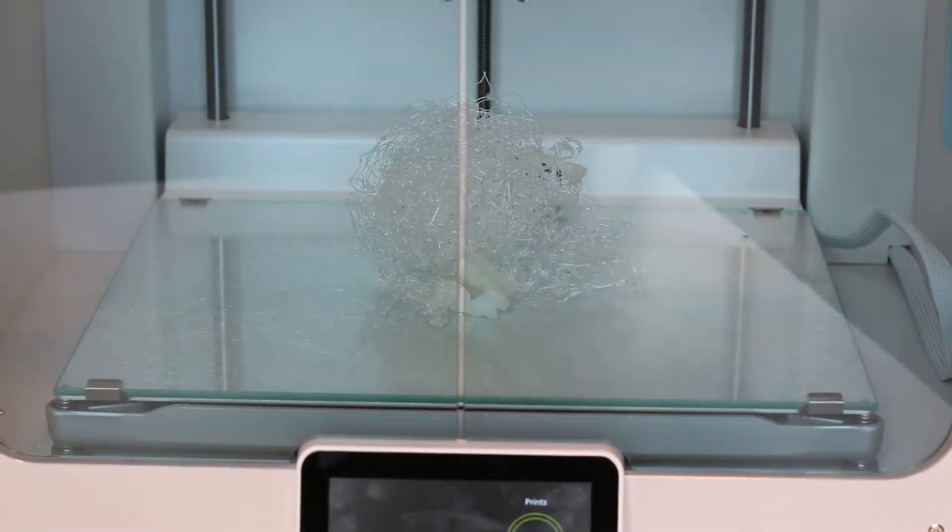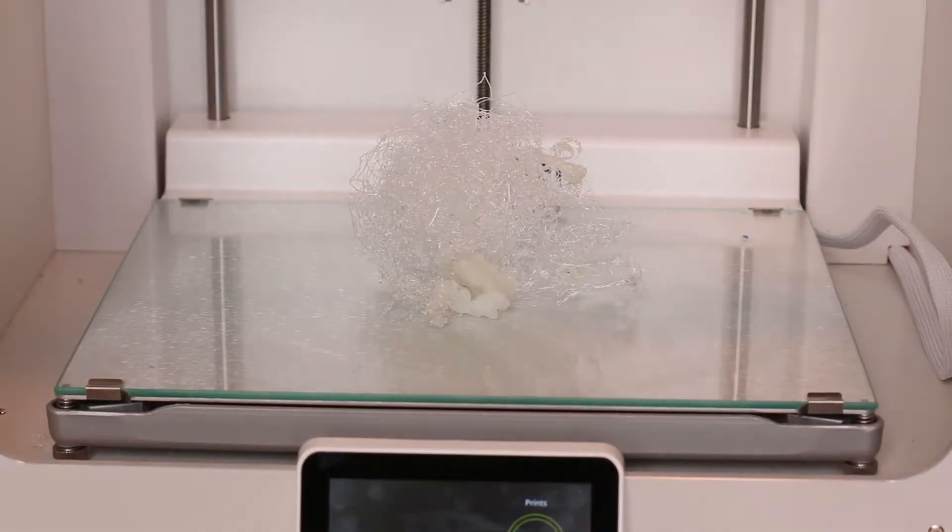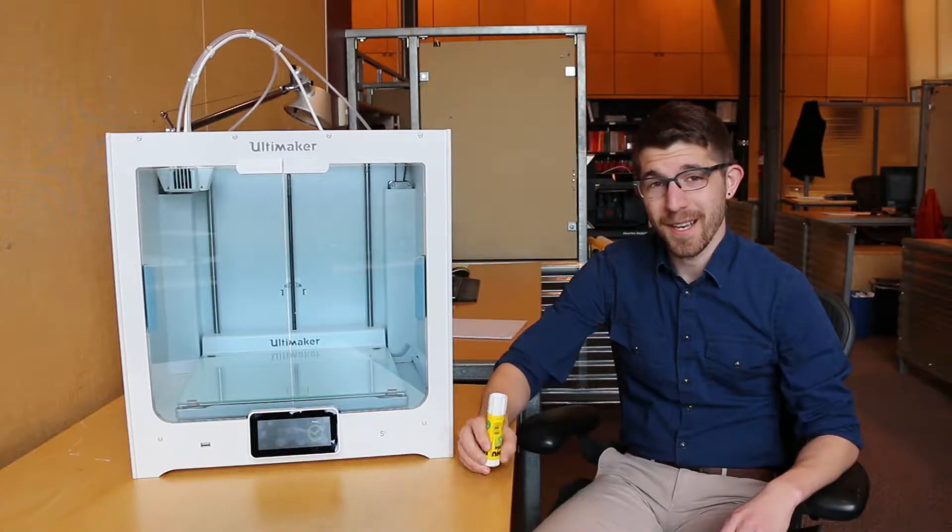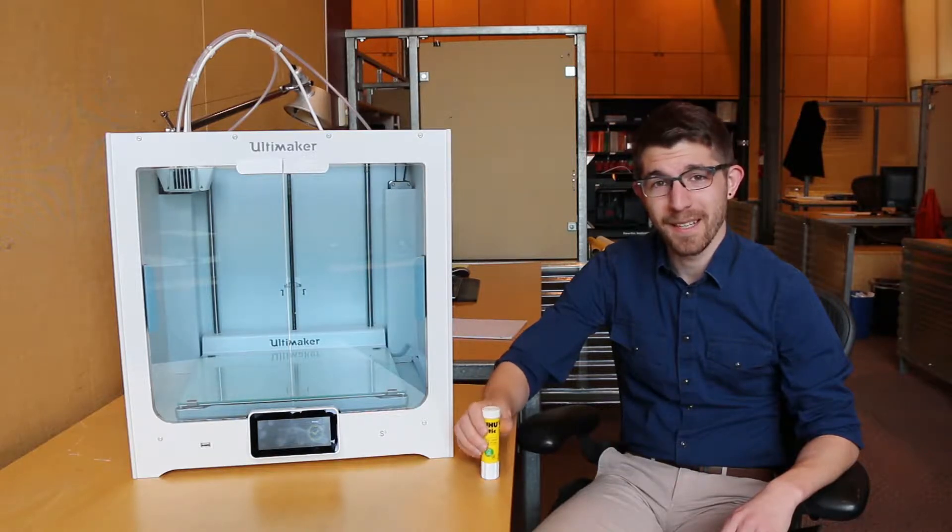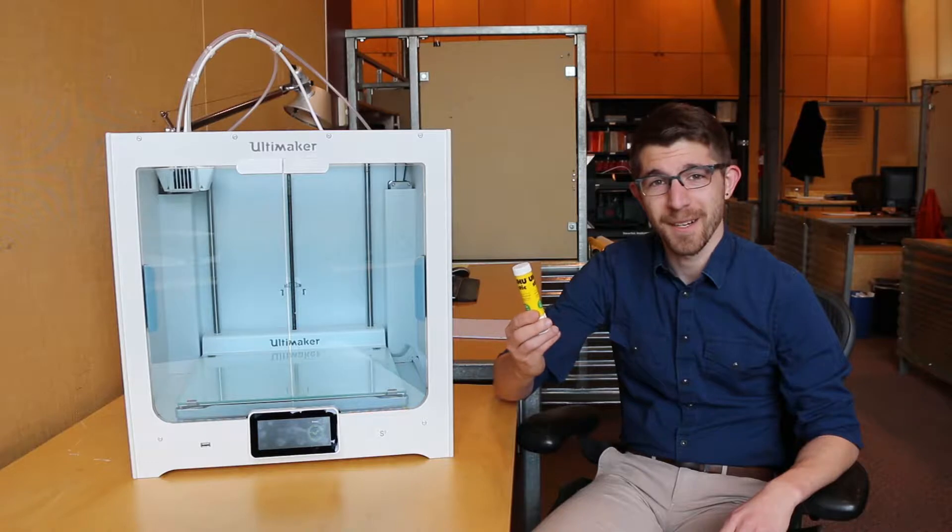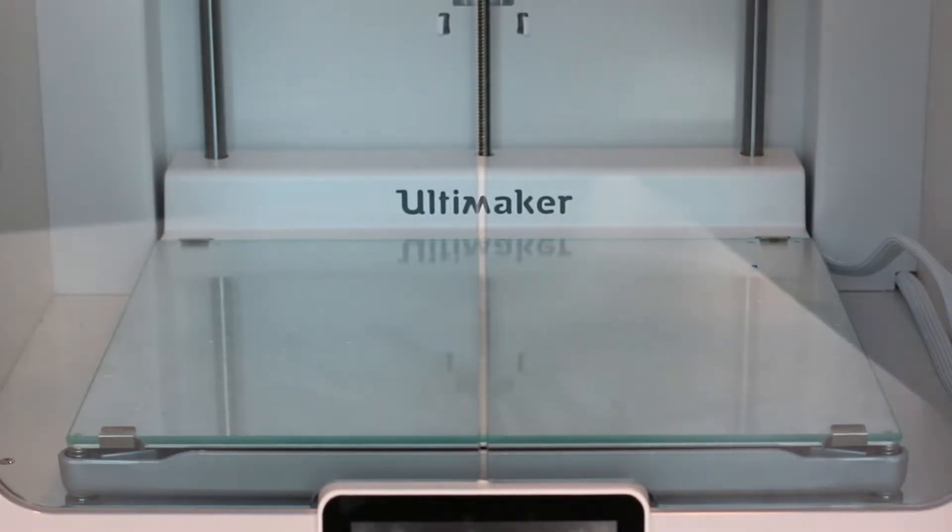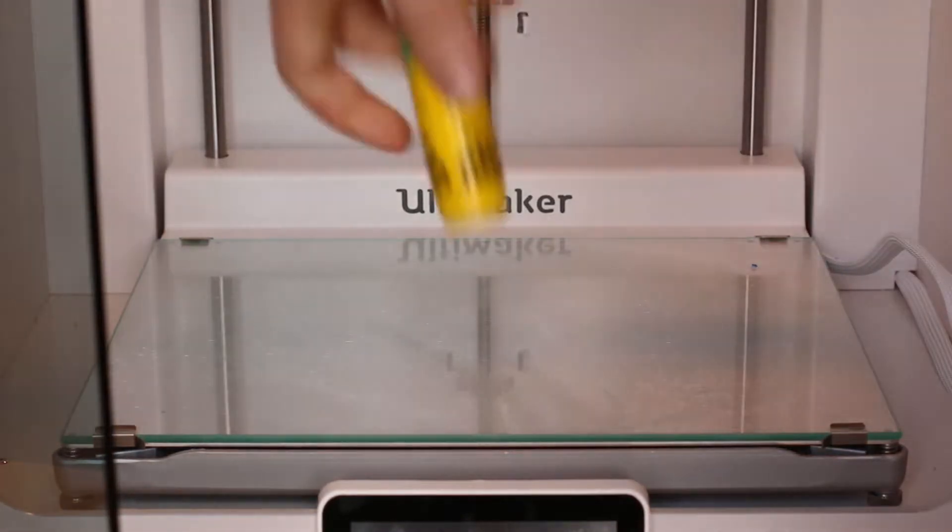So after last night's failed print, we learned pretty quickly that we should be following instructions on the spools that come with it. The Nylon Weaver spool last night told us that we should be using the glue stick that came with the Ultimaker to put glue on the bed for maximum adhesion. So I'm going to go ahead and put that glue on the bed now.